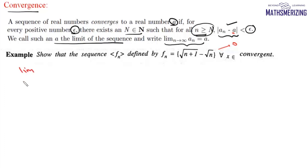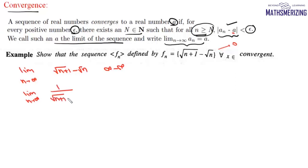We know that fₙ converges to 0. Taking the limit of √(n+1) − √n gives the ∞ − ∞ form. Multiplying by the conjugate gives 1/(√(n+1) + √n), which equals 1/∞, so the limit is 0. This sequence converges to a = 0, and 0 is the limit of this sequence.